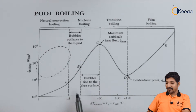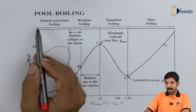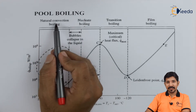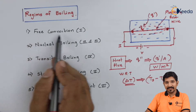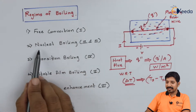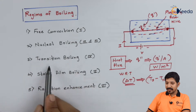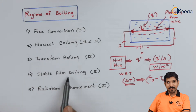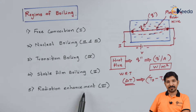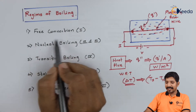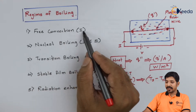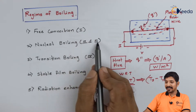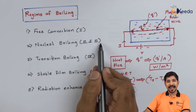They tried to categorize this profile into five categories: the first is natural convection or free convection, then nucleate boiling, then transition boiling, then stable film boiling, and finally radiation enhancement. Corresponding to each category or regime, they have given it a name, as shown in the diagram.